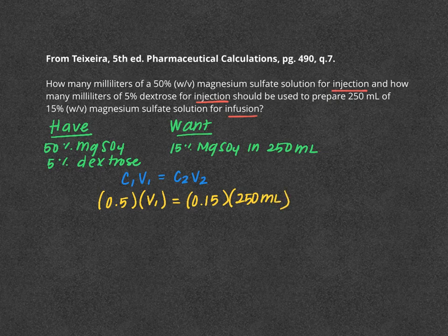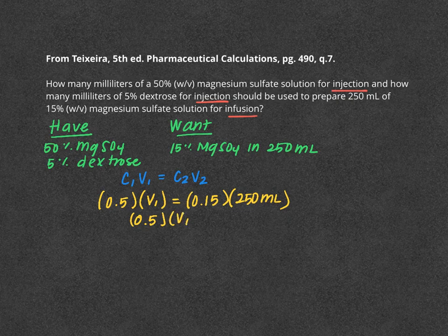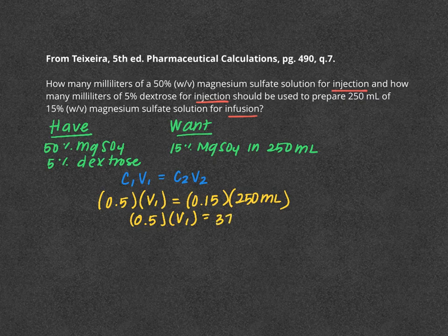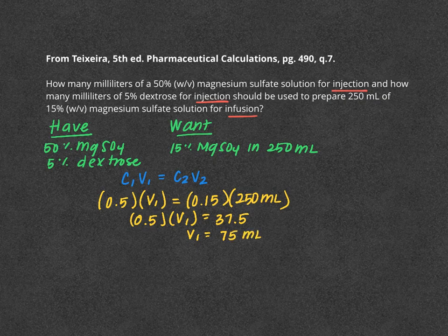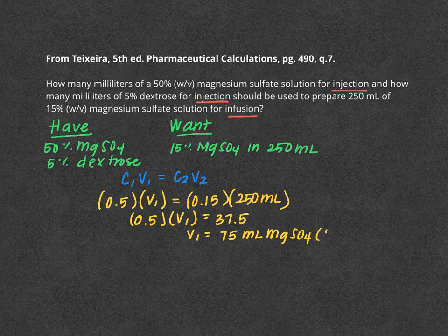So if we solve this, we can do 0.5 times V1 is equal to 37.5. Ultimately, our V1, if we solve, is 75 milliliters of magnesium sulfate. And if you remember, that's the 50% concentration.